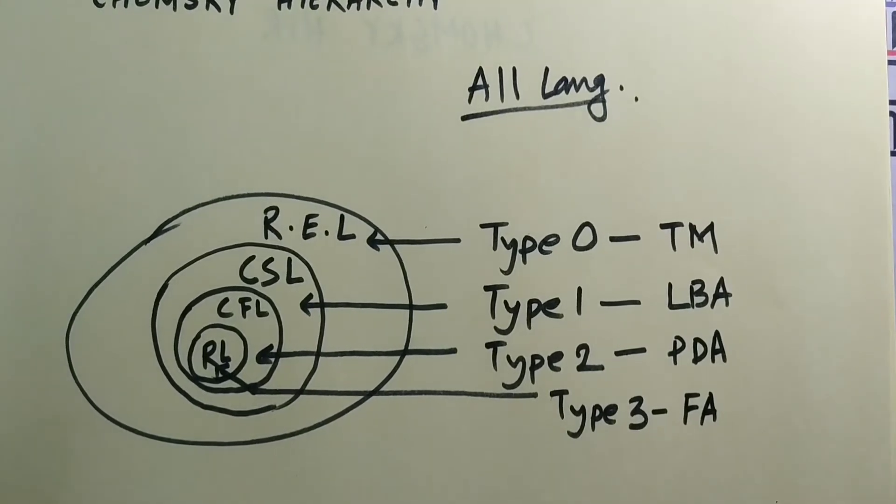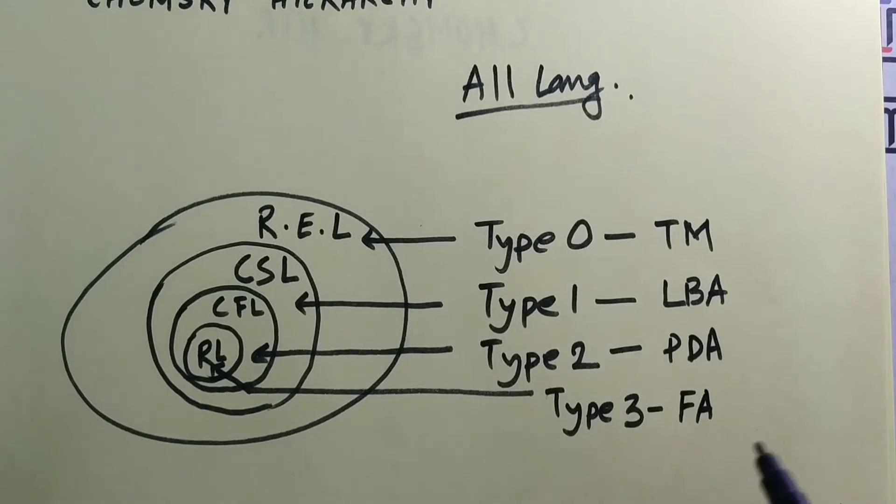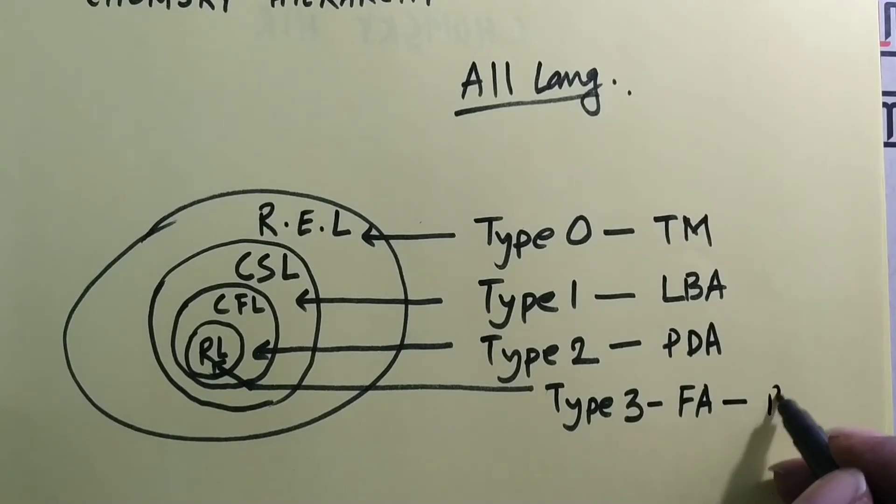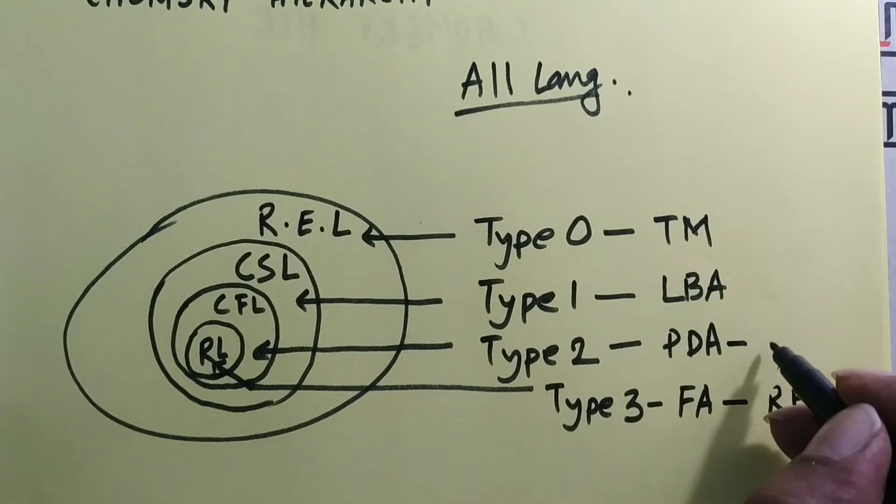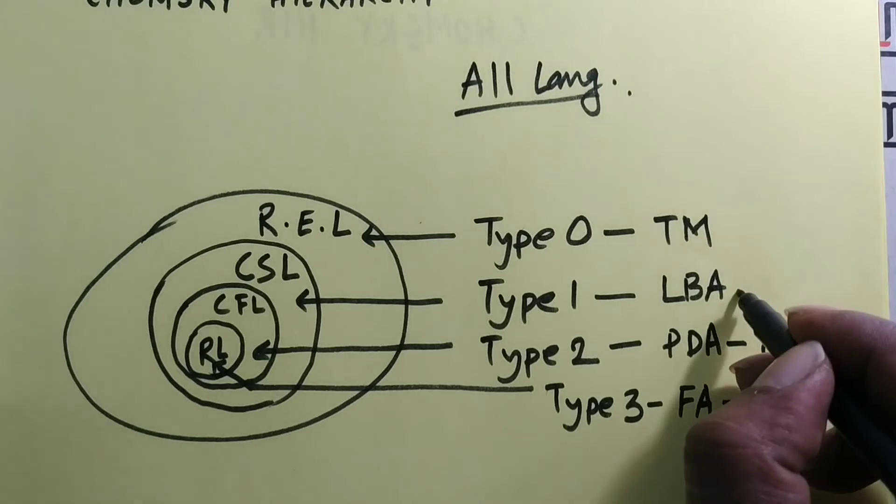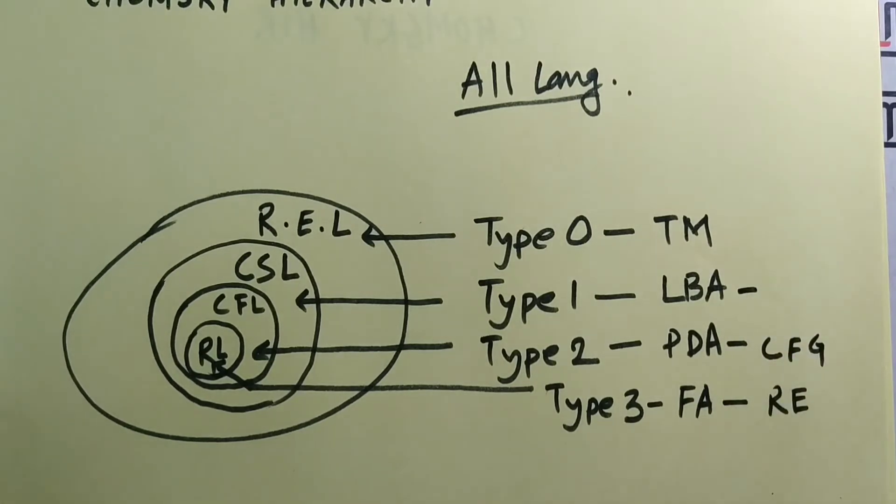And their recognition or representation. Type 3 languages are represented by regular expression. Type 2 languages are represented by context free grammars.